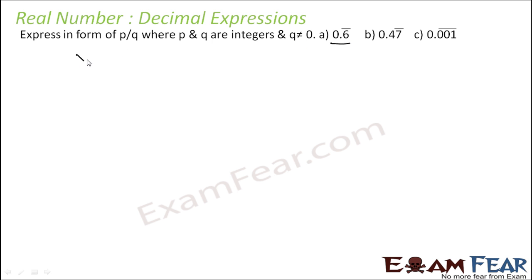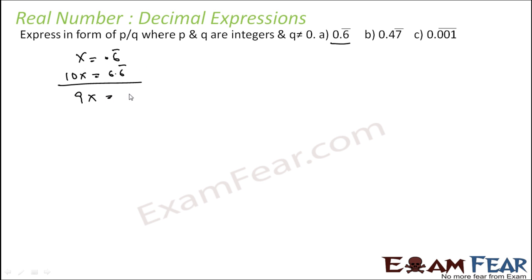First example: 0.6 bar. If x is equal to 0.6 bar, the number of repeating units is 1, so we multiply with 10x to get 6.6 bar. Subtracting: 10x minus x is 9x, and 6.6 bar minus 0.6 bar is 6. So x equals 6 by 9, which simplifies to 2 by 3.